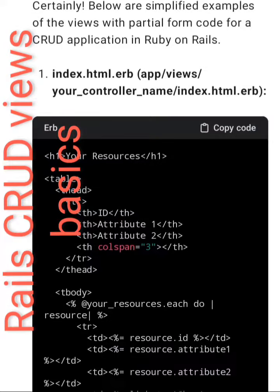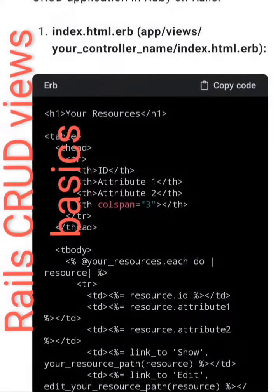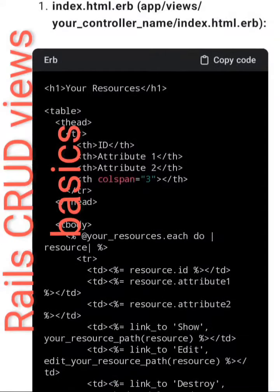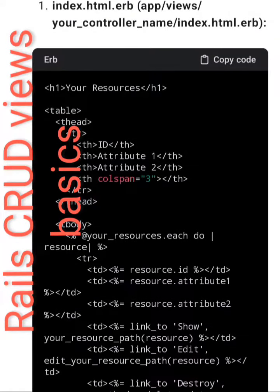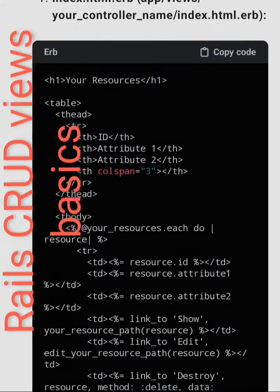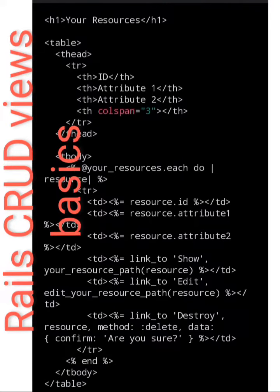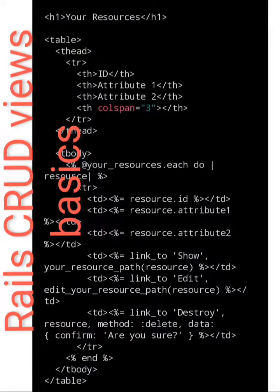Find examples of the views with partial form code for a CRUD application in Ruby on Rails. 1. index.html.erb — app/views/your_controller_name/index.html.erb — h1 your resources, table with id, attribute 1, attribute 2, colspan.